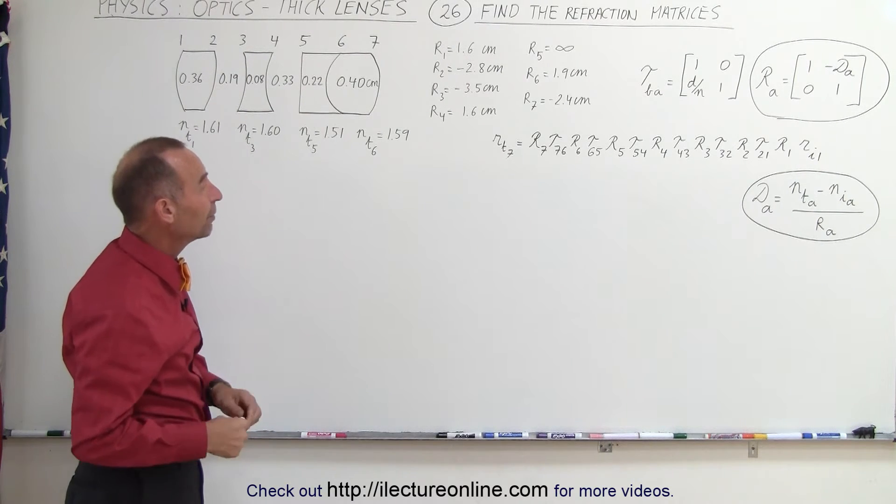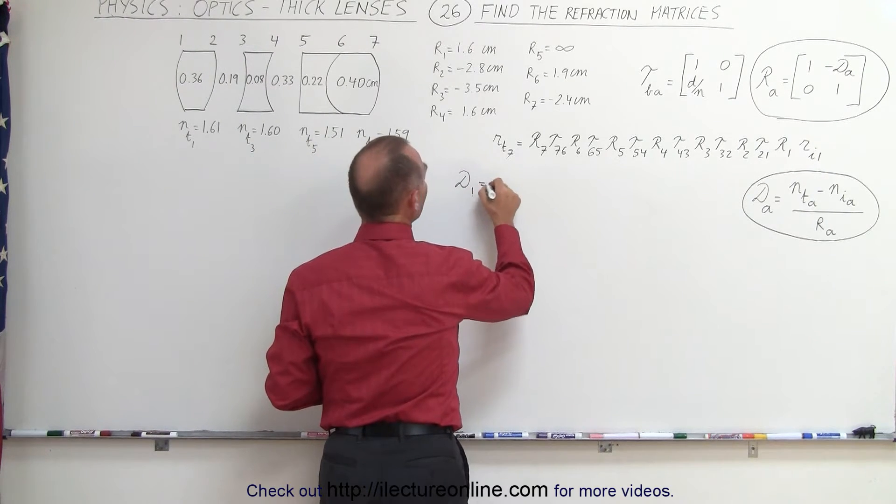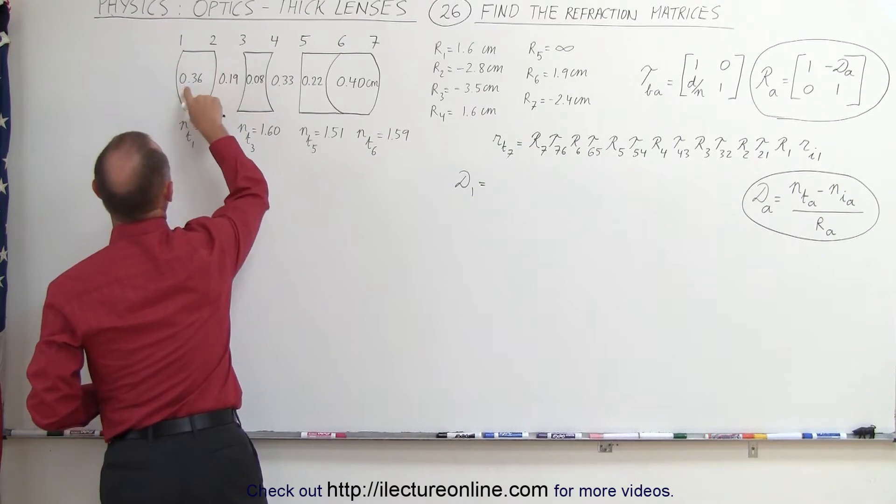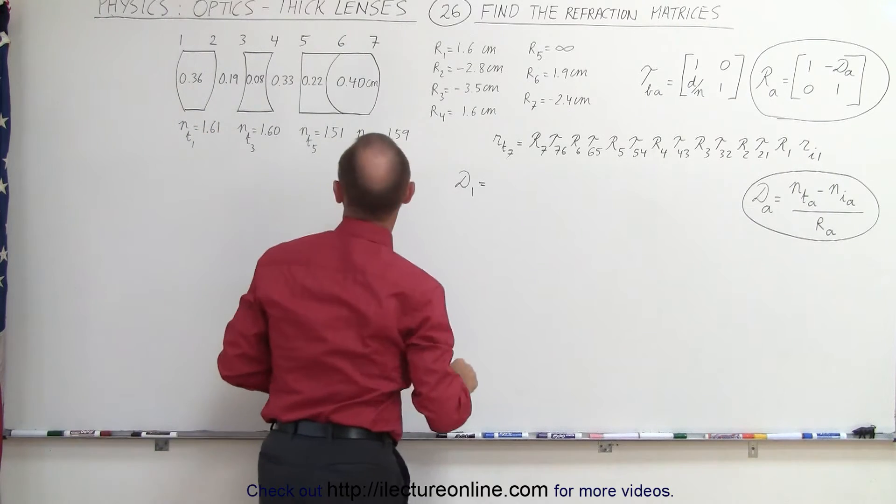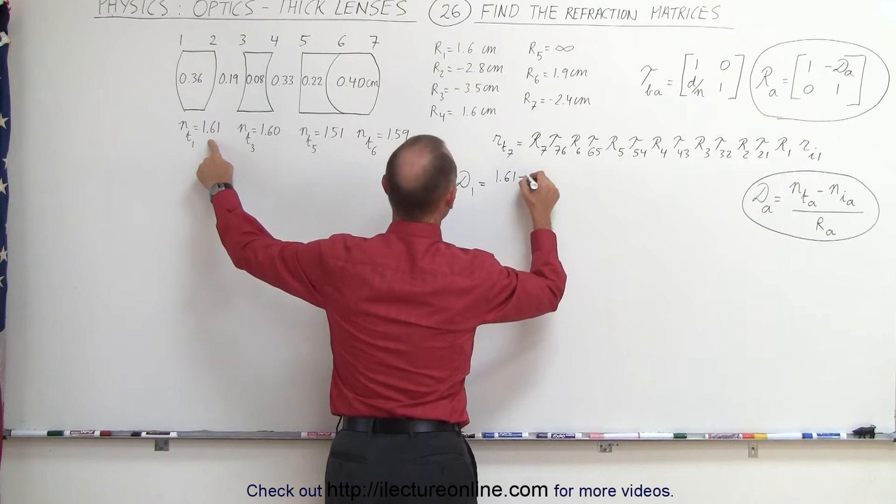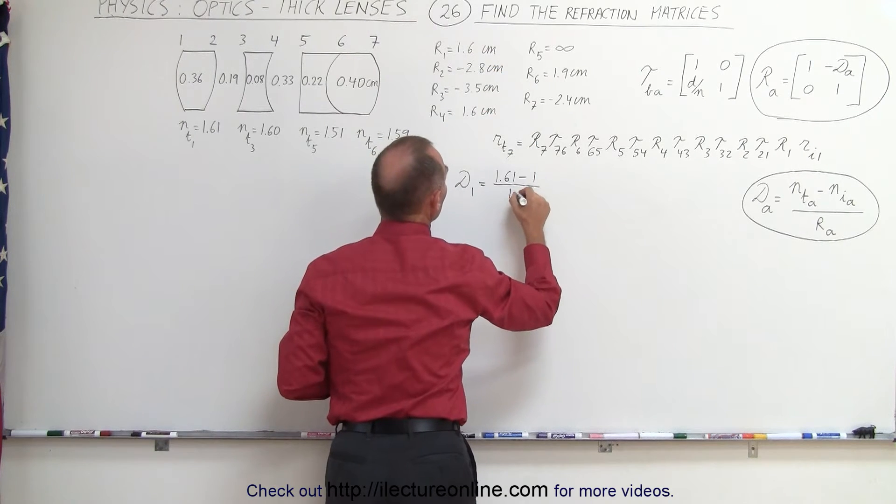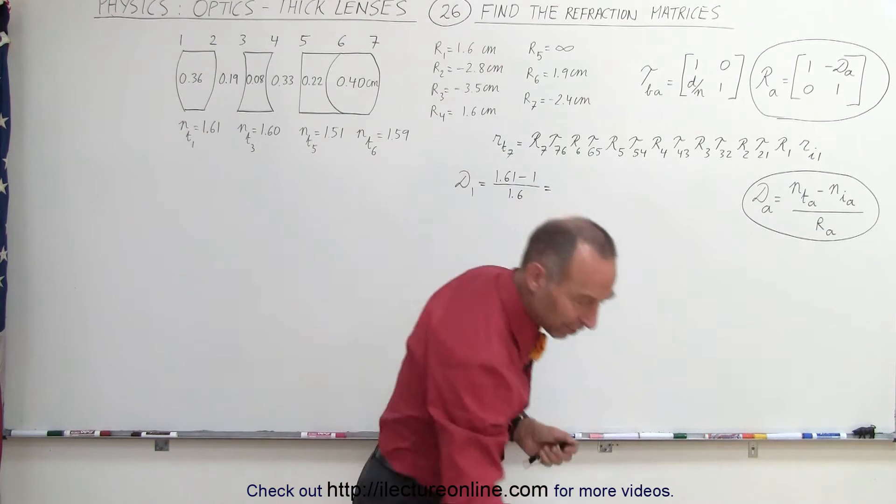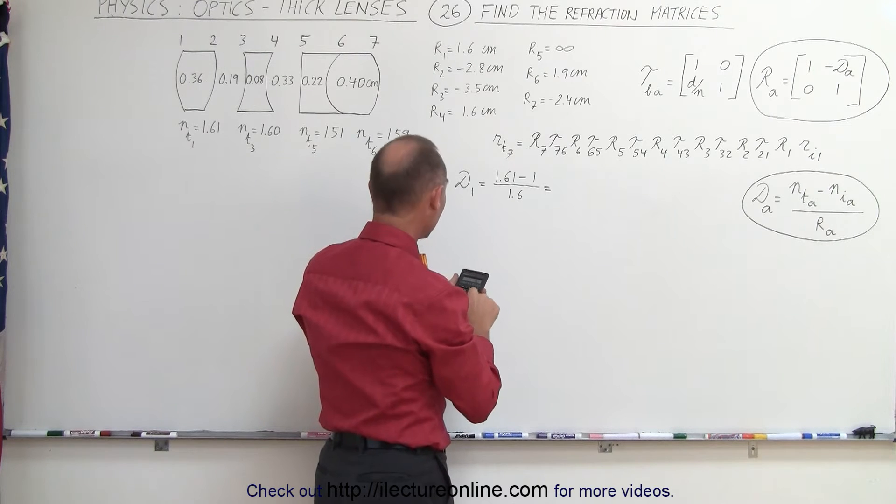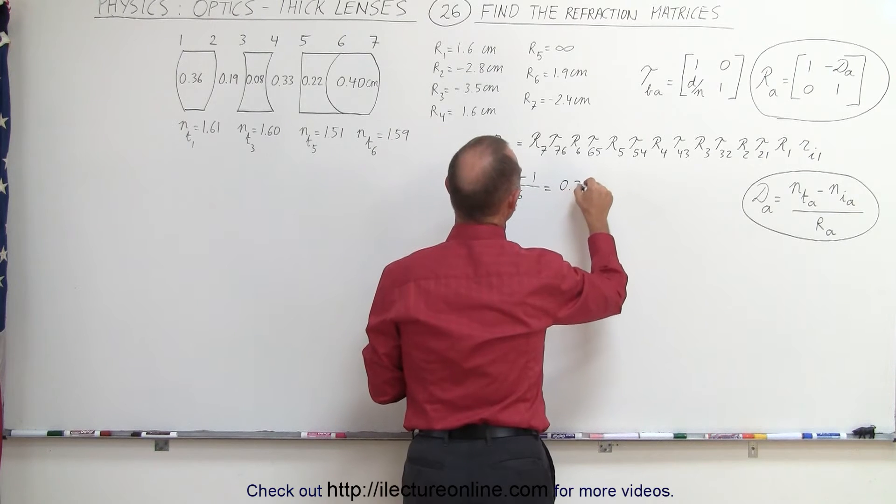We have the seven radii of curvatures of these seven boundaries, and so what we need to do in each case is find the power of each boundary, then plug that in to find the matrix, the refractive matrix for each boundary. Let's start finding all seven of the powers, starting with the first one. d1 equals the index of refraction across the boundary, so that's the boundary right here. This is the transmitted side, this is the incident side, so the index of refraction would be 1.61 minus one for air on the outside divided by the radius, which is 1.6 centimeters. So we have 0.61 divided by 1.6 and we get 0.38.